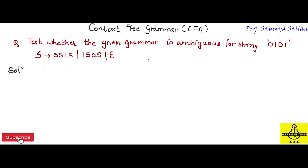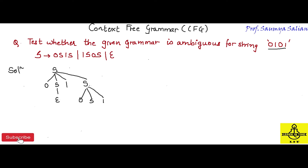Let's see whether I can construct two parse trees for the string 0101. I begin with the start symbol and use the production rule S → 0S1S. Since I need 0 in the beginning, I use this production rule 0S1S. Now for this S, I use the derivation S → epsilon. Going forward for the next S, I use the derivation S → 0S1S.